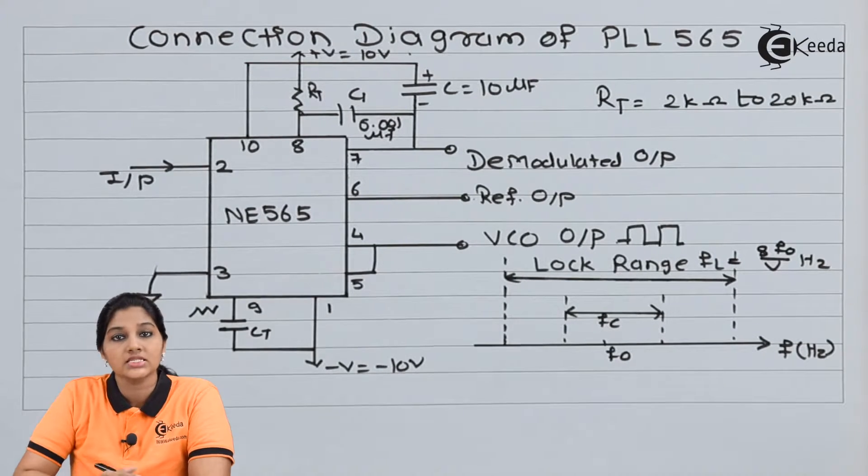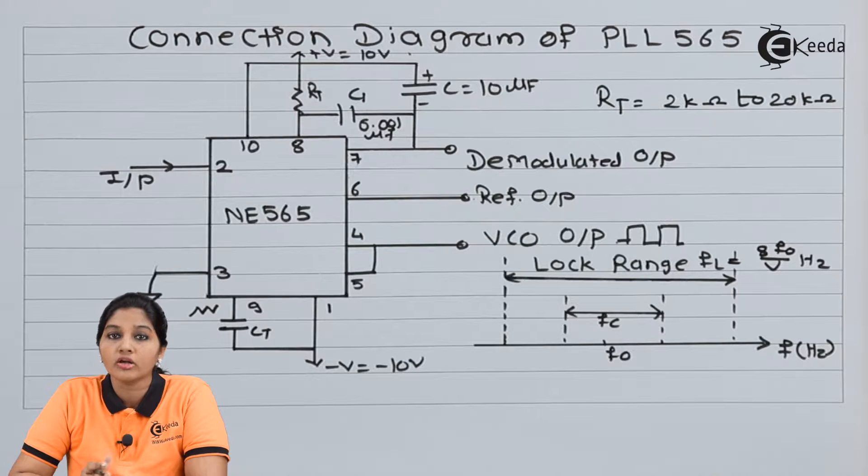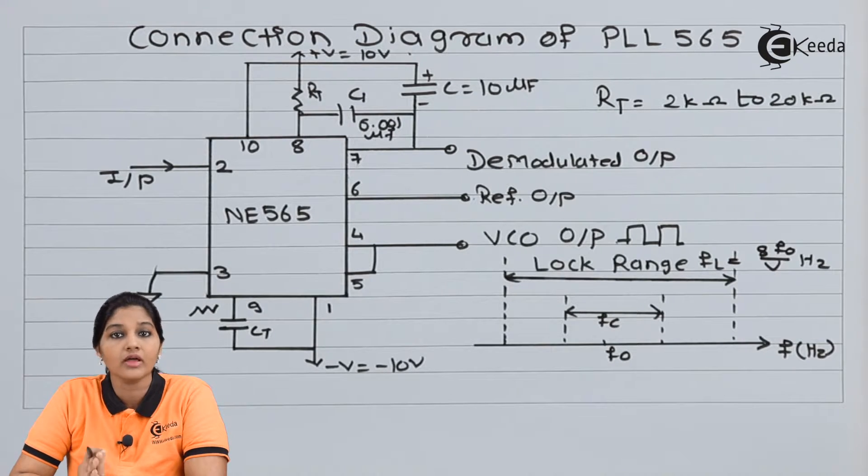The IC NE or SE565 is available either in 14-pin DIP package or 10-pin metal can package. Here we are looking at the connection diagram of IC565 having a 14-pin DIP package.